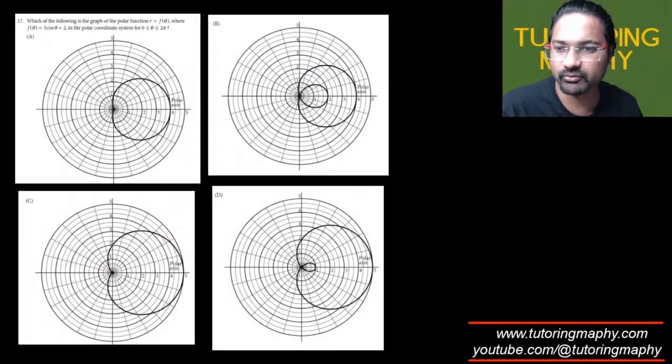This is an interesting one based on the polar equation. Which of the following is the graph of r = 3cos(θ) + 2 in polar form?